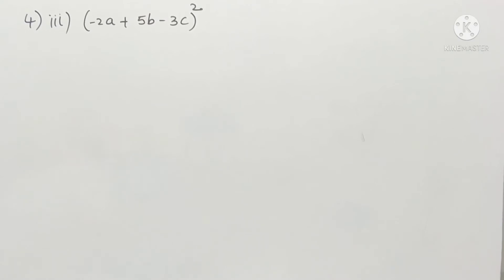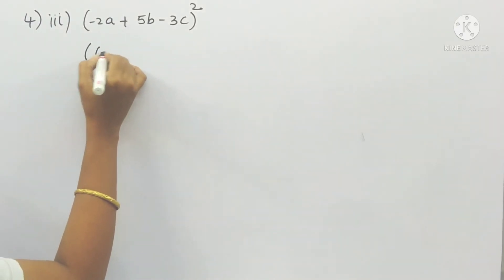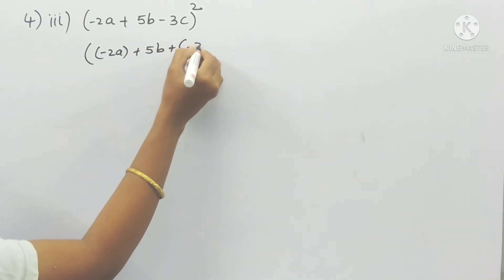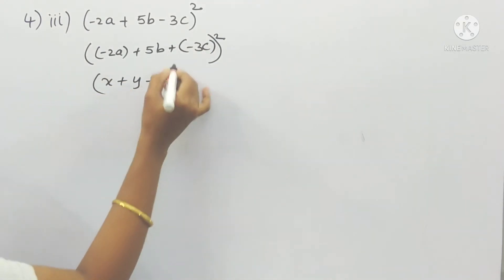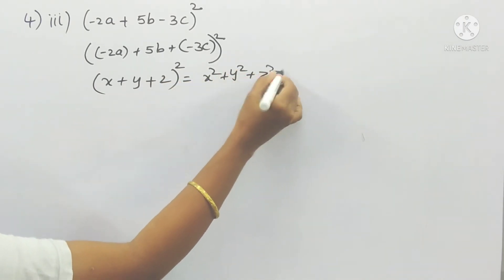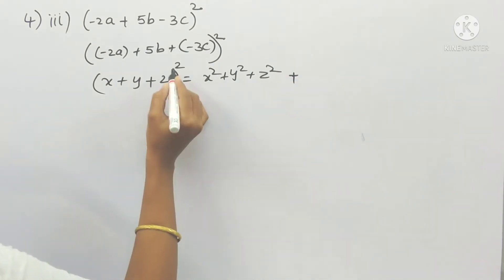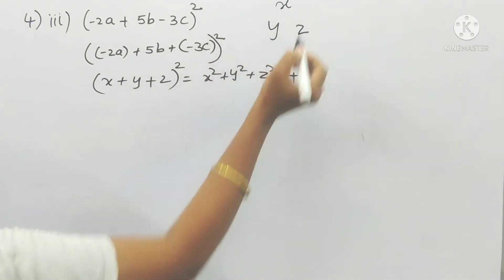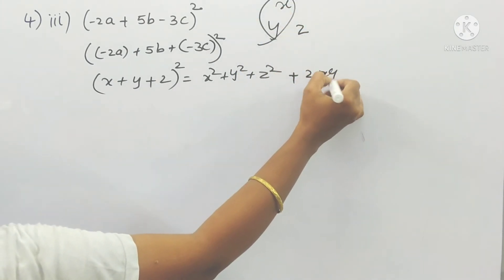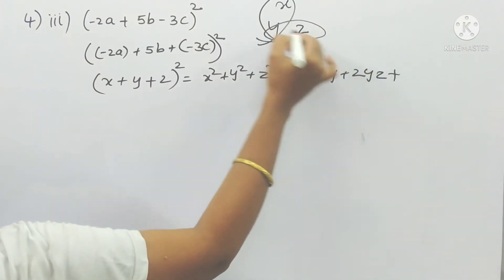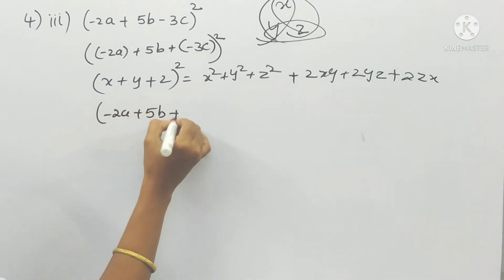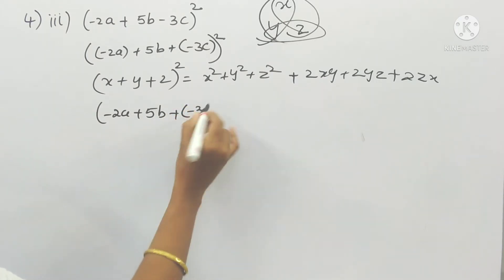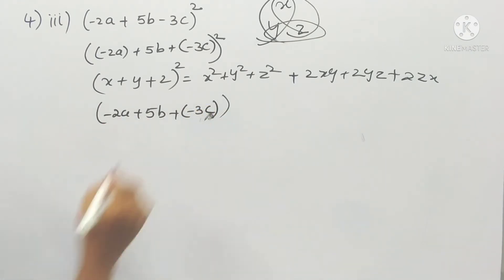The third one: (-2a + 5b - 3c)². I can write this as (-2a) + (5b) + (-3c) whole square. So now it is in the form of (x + y + z)². The formula gives x² + y² + z² + 2xy + 2yz + 2zx, where the degree must be 2. Here x = -2a, y = 5b, z = -3c.